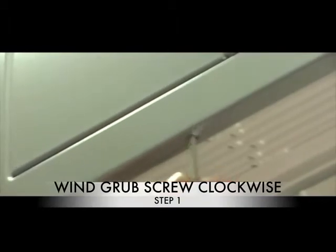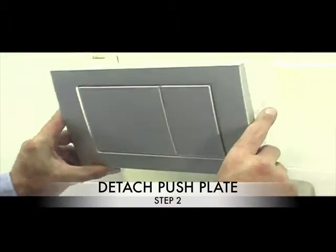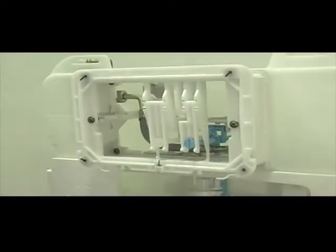To remove the metal plate, you may have to wind in a security grub screw on the bottom of the push plate. Step 2: Remove the push plate by applying pressure to the bottom.